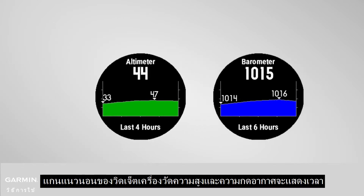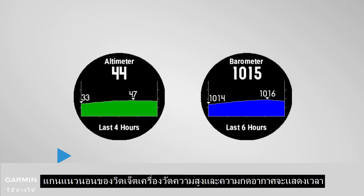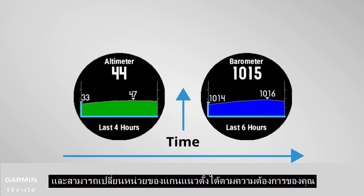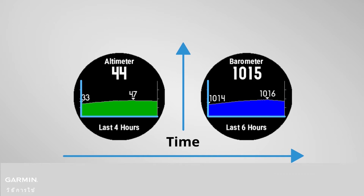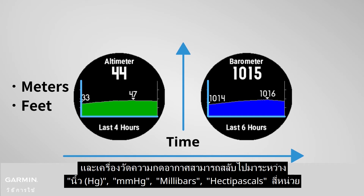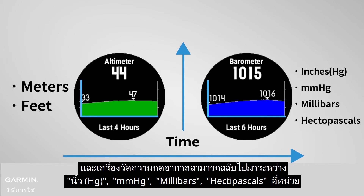The horizontal axis of the altimeter and barometer widget represents time, and the unit of the vertical axis can be switched according to your needs. The altimeter can be switched to meters or feet, and the barometer can switch between inch, mmHg, millibars, and Pascal — 4 units in total.